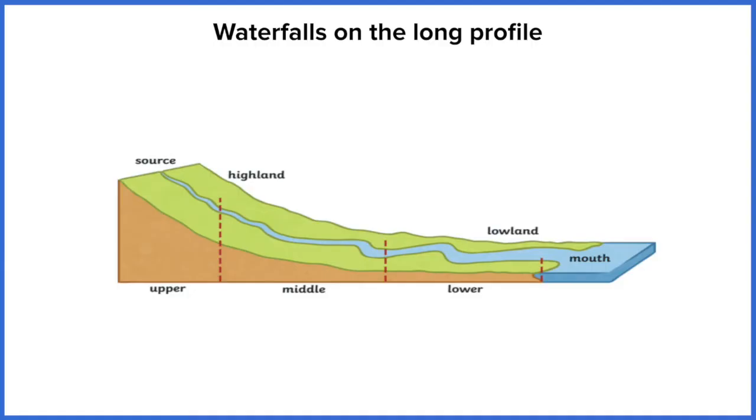We know from a few lessons ago that vertical erosion mainly happens along the upper course of the river. If we know that a waterfall is a significant change in the height, the elevation of the river, then it stands to reason that vertical erosion is going to be the cause. So waterfalls are found in the upper course.